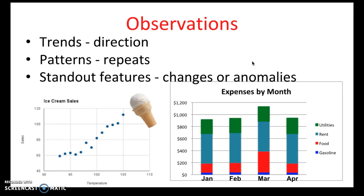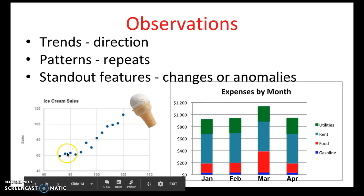Standout features are changes or anomalies. What I mean by change, if we look at the ice cream sales, there's only a small increase in the number of sales in this region of the graph with temperature. However, when we get to this region, there's a huge jump in the number of sales with the temperature. So that will be a change. The slope of this region of the graph is different than the first region.